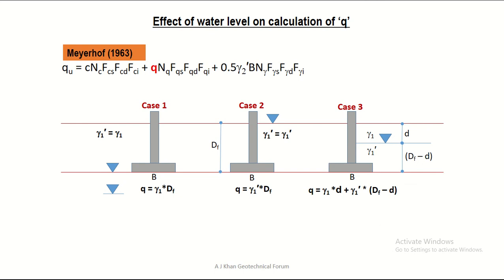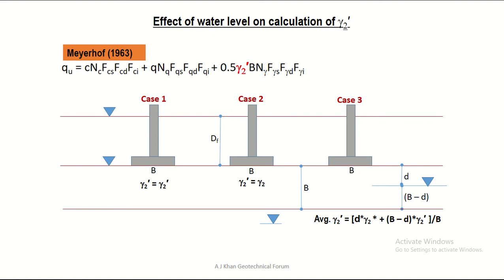You don't need to memorize all these cases — you just need to understand what is happening and where to make the changes based on the water level location. This is very important because many textbooks write the equation loosely as gamma·Df·Nq and gamma·B·N-gamma without distinguishing the two gammas. In fact, the first gamma refers to the unit weight within the depth of the foundation, and the second gamma refers to the unit weight of the soil below the footing — these two gammas have different meanings.